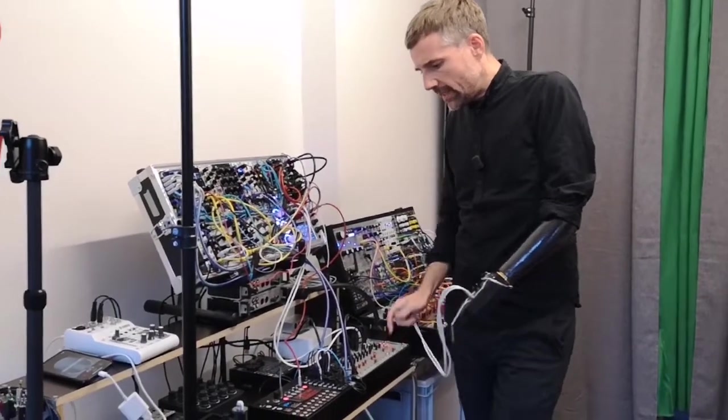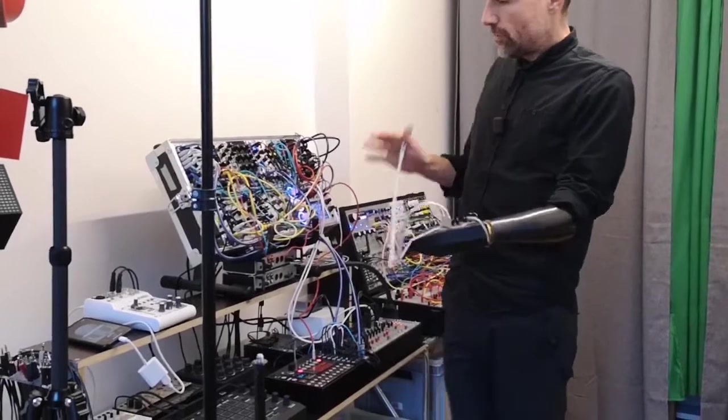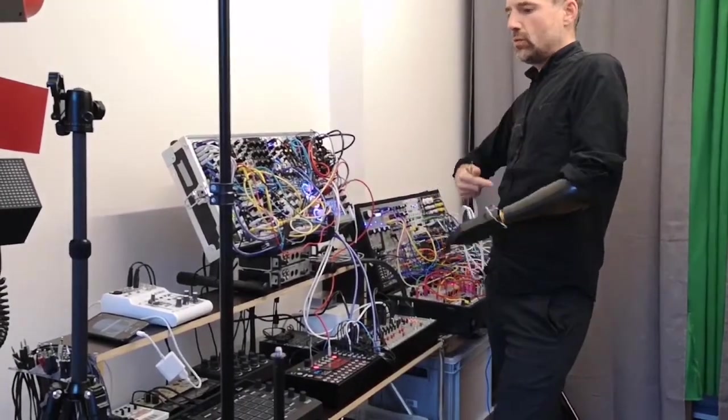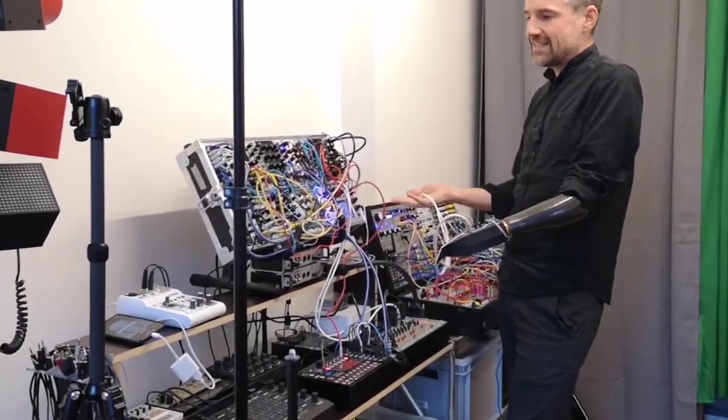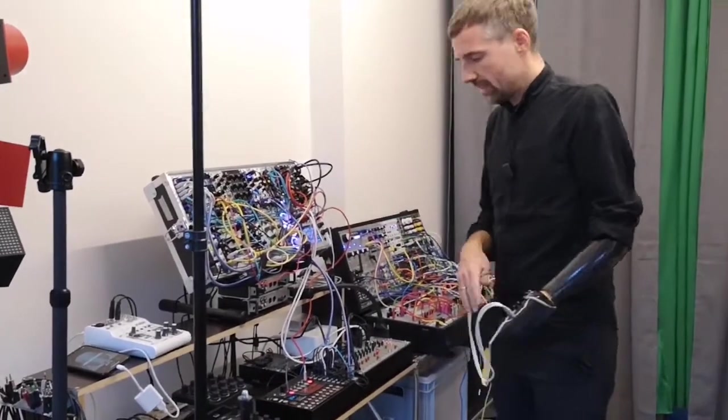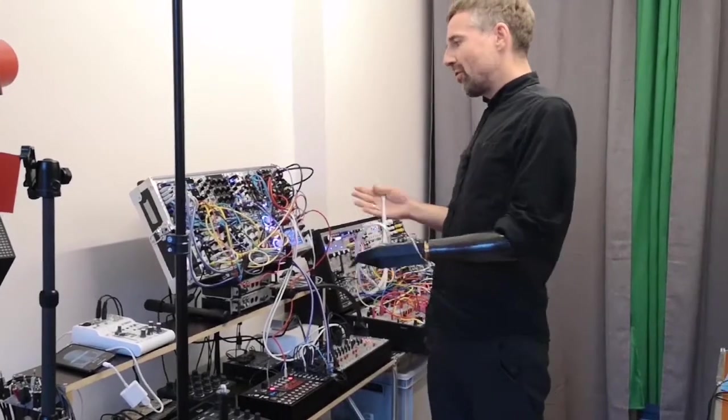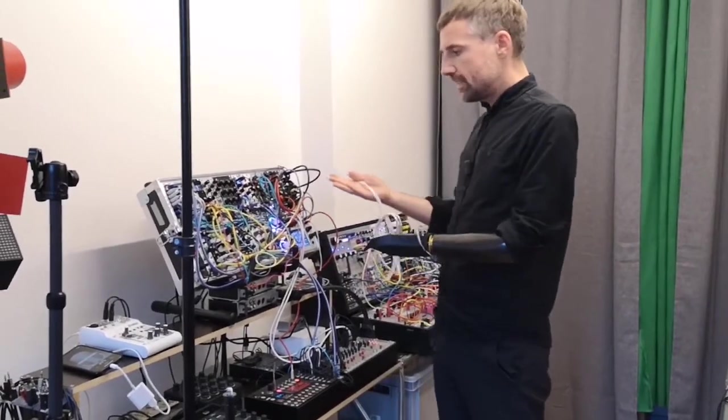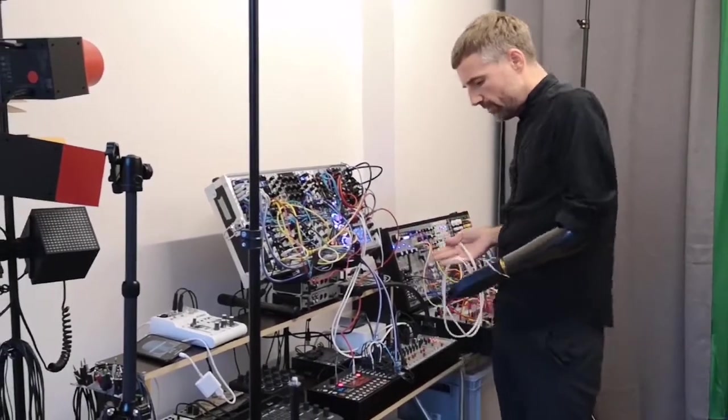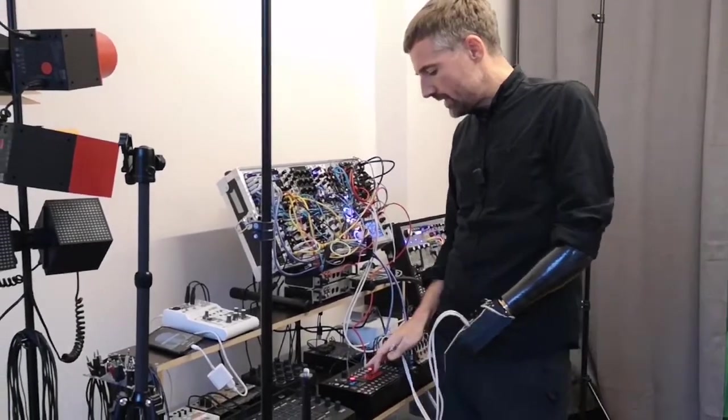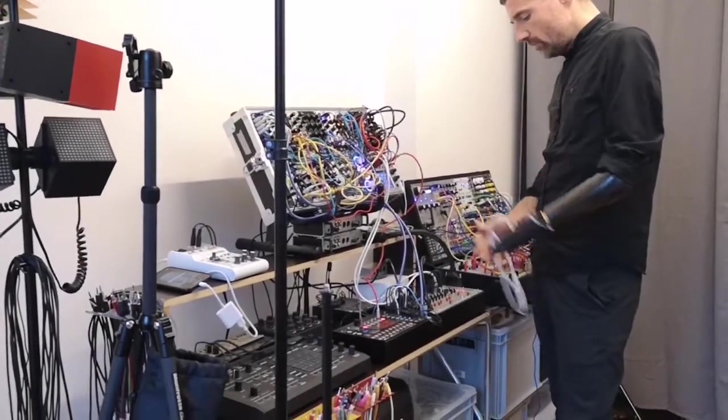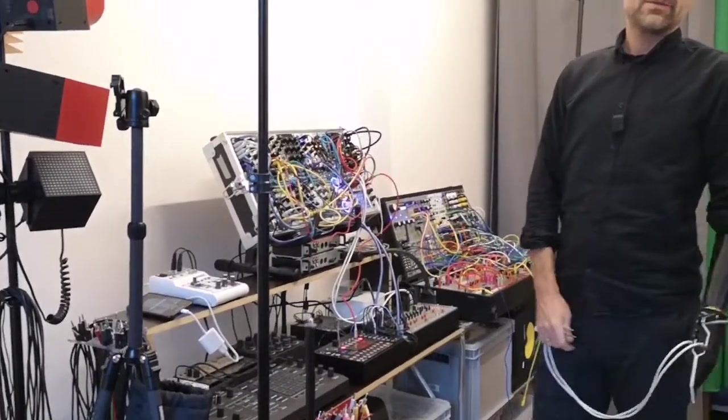And then what you see here in the middle is what I would be taking to maybe a club or a place where it's really about making danceable music. So this is a simple modular synthesizer with six voices and a sample-based drum computer and we have a sequencer down here that basically controls all these voices and then we have a mixer here where it all comes together.